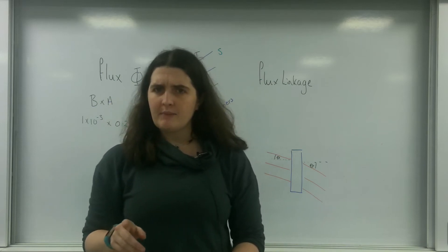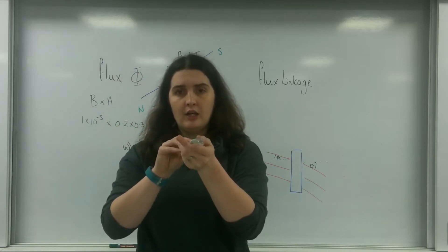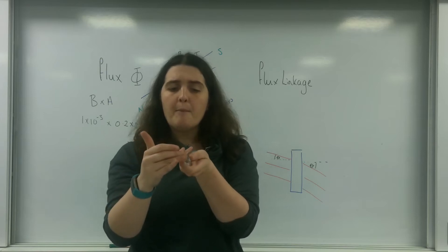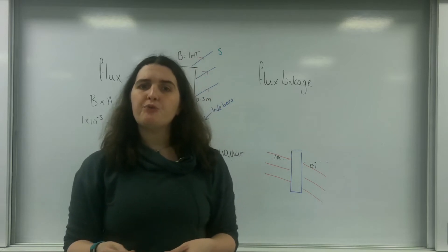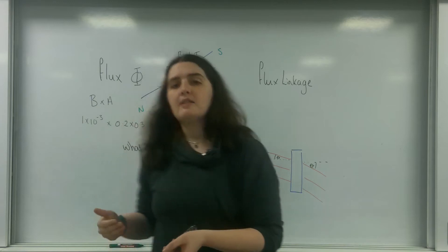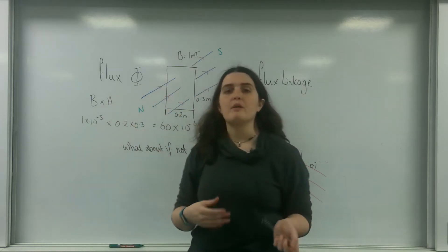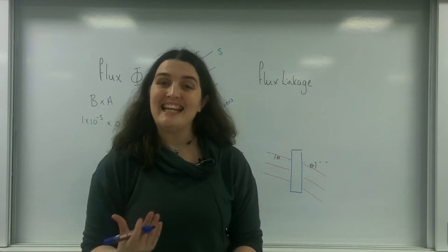Now objects like a solenoid, where the magnetic field line is going through, it is affecting more than one area. It's actually affecting multiple areas. This is called flux linkage. This is almost taking into account a depth. So this is 2D, and this is almost like looking at it in 3D.